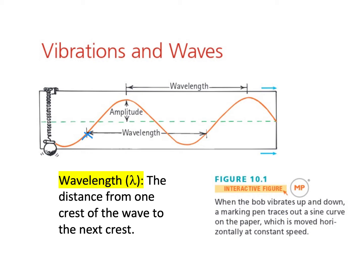The usual symbol we use to represent a wavelength is the Greek letter lambda. The wavelength is usually represented by lambda, which is just a symbol taken from the Greek alphabet.